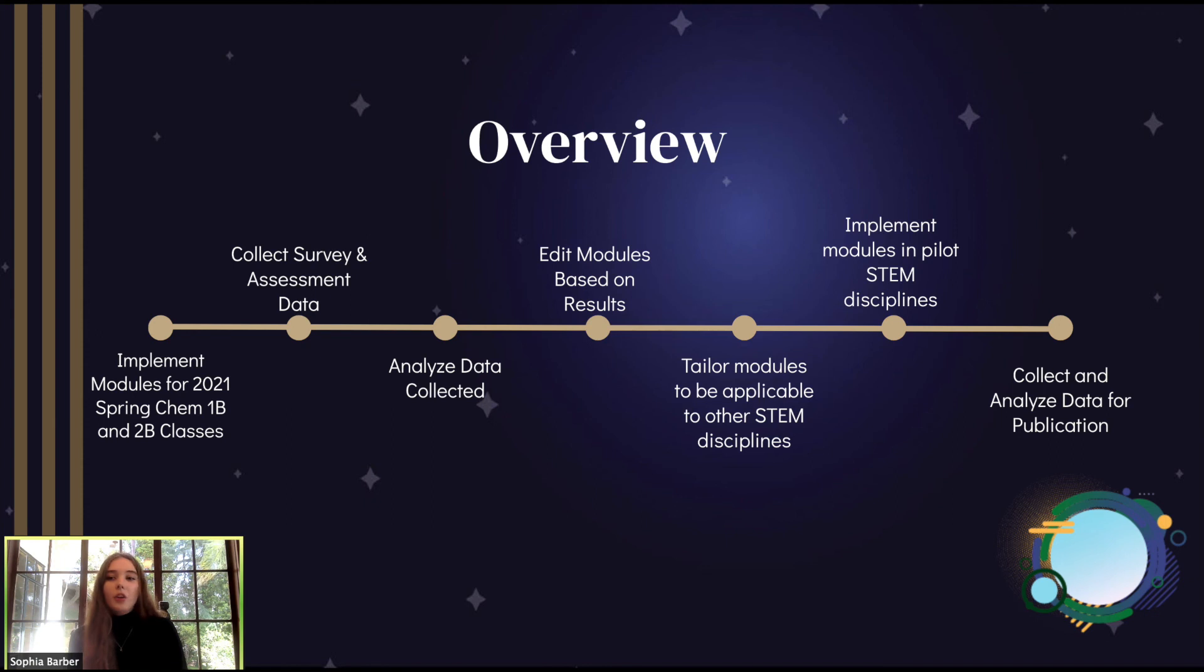In addition to the Python coding module, a percent auction module where students will determine the percent auction in a room of their choice at home will be implemented into these courses in fall of 2021. In creating these additional modules, we hope to diversify our archives so this module learning system can be applicable to other STEM disciplines such as biology, physics, and computer science.